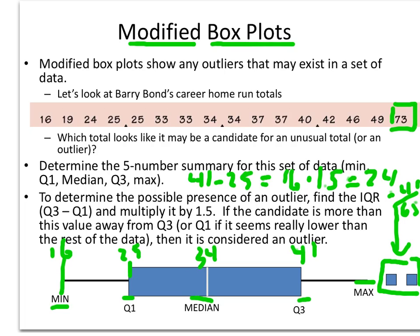I'm going to add that to Q3. So 41, 24 plus 41 gives me 65. So this turns out to be the boundary that determines whether outliers exist or not. So in this case 73 is an outlier. So my maximum then becomes the biggest number that's not an outlier which is 49. We actually only have one outlier in the set. And it would be at 73.